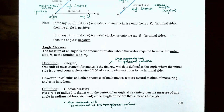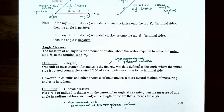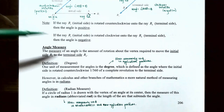Ray R sub 1 is called the initial side. It's rotated counterclockwise onto ray R sub 2 which is called the terminal side, and if it's rotated counterclockwise the angle is positive. However, if ray R sub 1, that's your initial side, is rotated clockwise onto ray R sub 2 which is the terminal side, then the angle is considered negative.